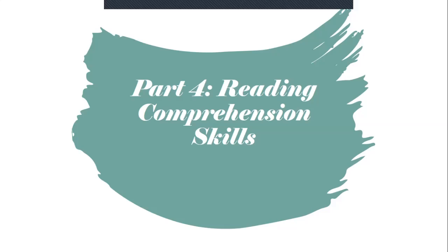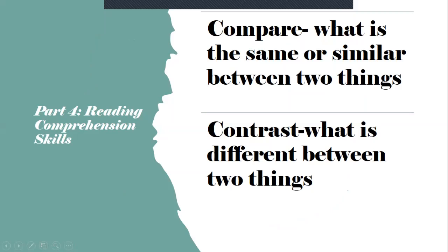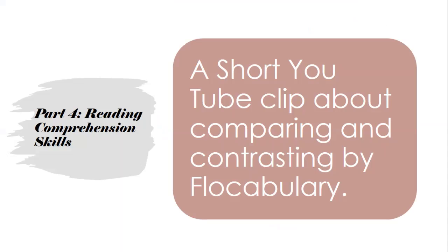So we're going to talk about our reading comprehension skills today. This is part four. Part four reading comprehension skills is comparing and contrasting. When we compare something, it is what is the same or similar between two things. When we contrast, it is what is different between two things. I'm going to show you a short YouTube clip about comparing and contrasting by Flocabulary.